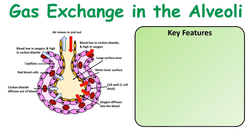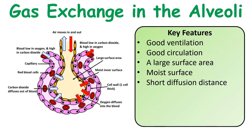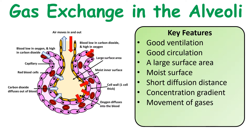Just to recap on the key features in the alveoli that enable gas exchange: remember that we've got good ventilation, good circulation, large surface areas, a moist inner lining, a short diffusion distance. You need to constantly refer to concentration gradients and talk about the movements of gases — carbon dioxide moving out of the blood, oxygen moving in.